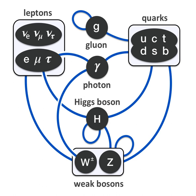The Higgs particle is a massive scalar elementary particle theorized by Peter Higgs in 1964, when he showed that Goldstone's 1962 theorem on spontaneous symmetry breaking provides a third polarization of a massive vector field. Goldstone's original scalar doublet — the massive spin-zero particle — was proposed as the Higgs boson and is a key building block in the Standard Model. It has no intrinsic spin, and for that reason is classified as a boson, like the gauge bosons, which have integer spin.